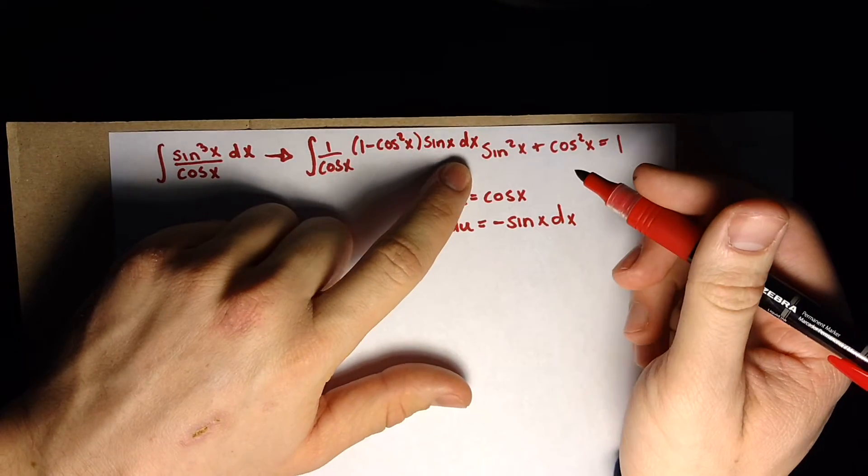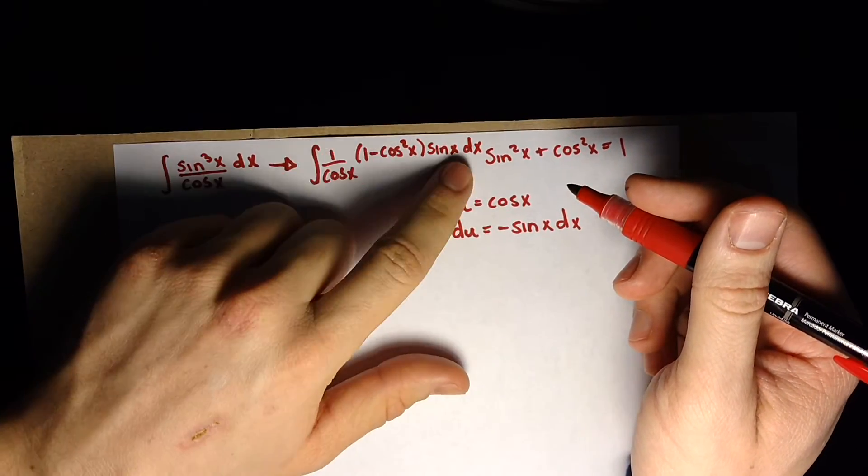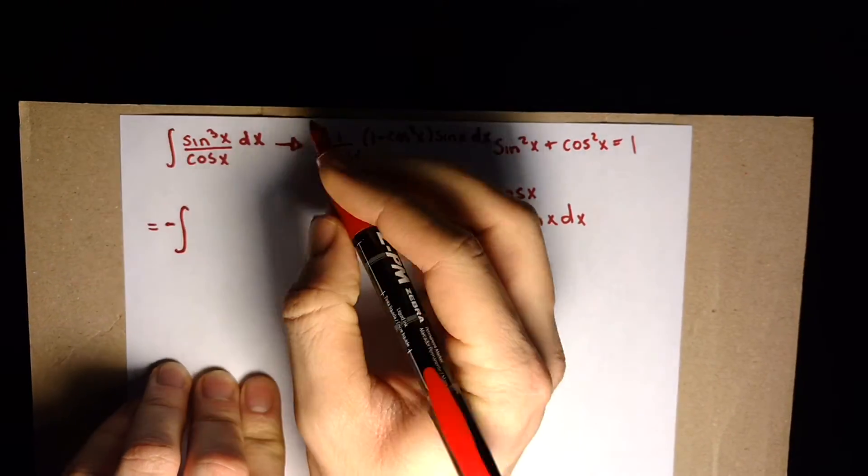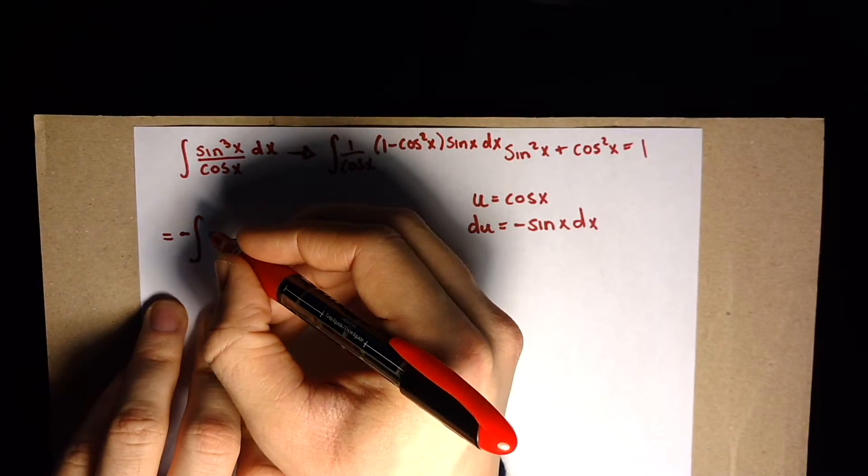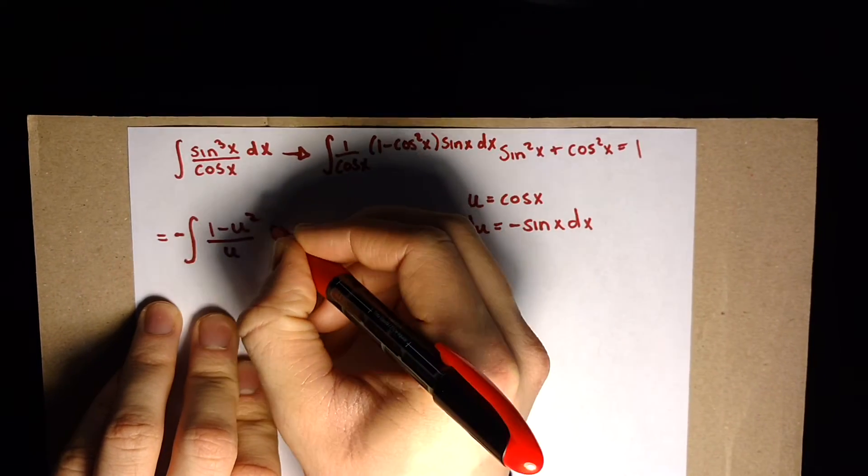Now you see we have sine of x dx at the end here. So if we add a negative to the front, this ends up just being u terms and then du. So we've got the integral of 1 minus u squared all over u times du, with a negative in front.